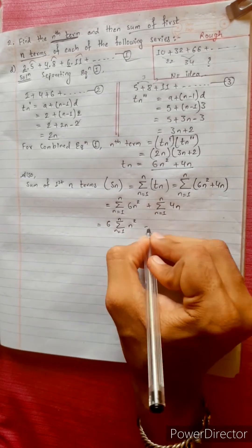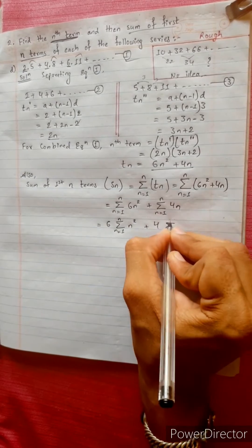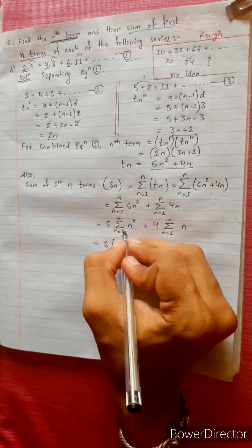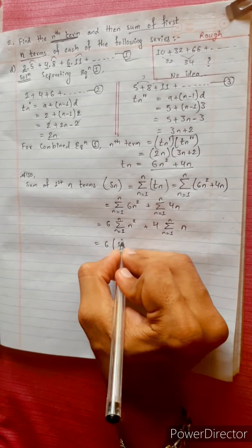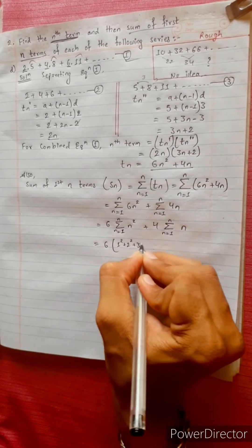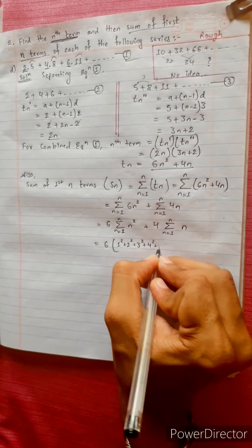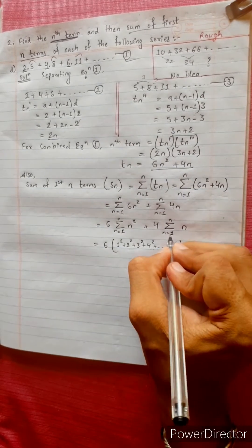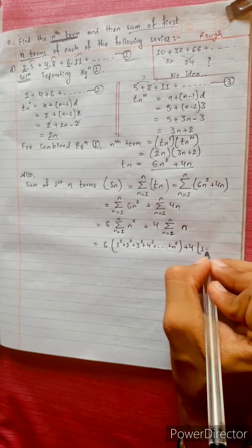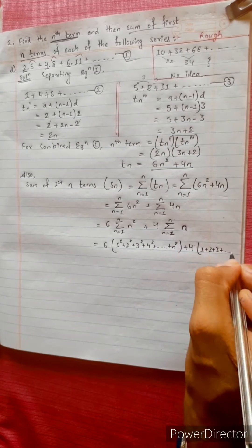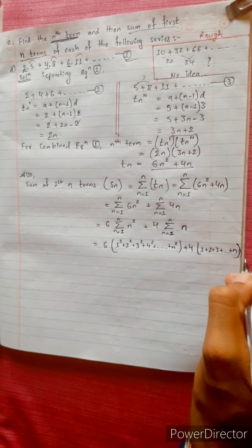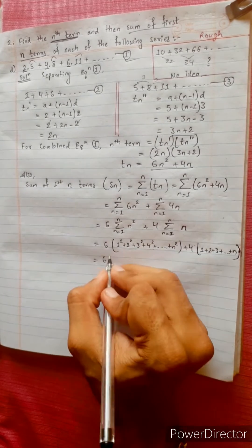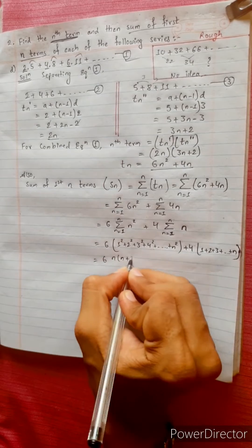Expanding: n² equals 1² + 2² + 3² + ... + n², and the sum of n equals 1 + 2 + 3 + ... + n. So Sn equals 6 times the sum of squares plus 4 times the sum of natural numbers.